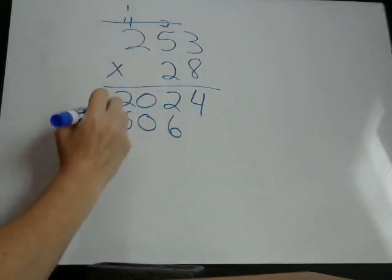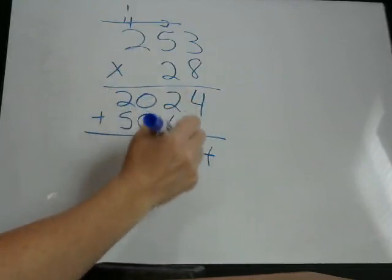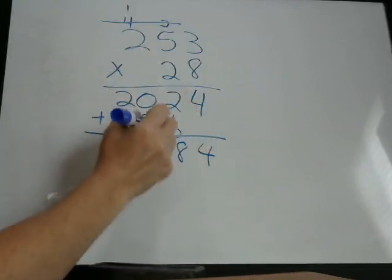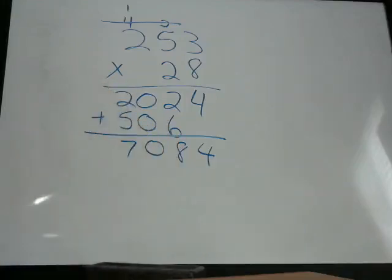Now we don't have any more digits, so we're going to add this up. 4 times nothing is 4. 2 plus 6 is 8. 0 plus 0 is 0. 2 plus 5 is 7. 7,084.